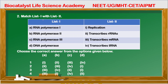Question 2: Match list 1 with list 2. Enzymes are given here — RNA polymerase I, II, III, and DNA polymerase. RNA polymerase I works for transcription of rRNA genes, so its answer is second. RNA polymerase II transcribes messenger RNA, answer is third. RNA polymerase III transcribes tRNA, answer is four. DNA polymerase works for DNA replication. So the correct option matching A to second, B to third, C to four, D to first is option number second.